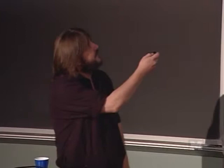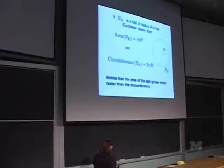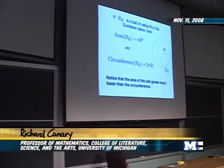There are just a few facts for comparison about Euclidean space. The radius of a ball is r. Its area is pi r squared — it grows quadratically. Its circumference, the length of the circle, is 2 pi r — it grows linearly. One thing you should notice is that the area is growing much faster than the circumference, which means most of the area is near the middle, not out near the boundary.